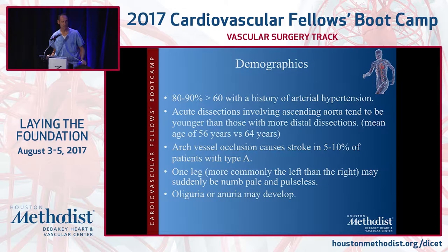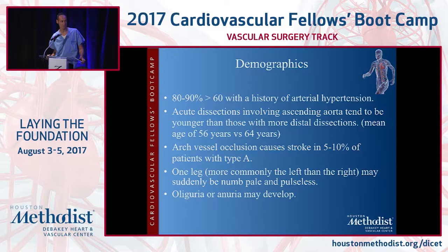As far as demographics, 80 to 90% of patients are 60 years or above and have arterial hypertension. Acute dissections involve the ascending in patients who are generally a little bit younger. Arch vessel occlusion occurs in about 5 to 10% of those with type A dissections. If patients have dissections overall and are going to have ischemia of a leg, it's generally the left leg. Interestingly, you may have a stronger pulse on that left side, although that's where they're complaining of symptoms. They may also become anuric or have decreased urine output.